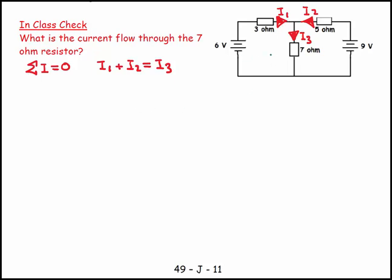And then the next thing I need to do is pick a loop direction, and I always pick clockwise. I don't know why, I just always pick clockwise. I don't care about the direction of the orientation of the batteries. I don't care, I just always pick clockwise. And the junction rule says, the sum of the voltages in a loop equals, sorry, the loop rule says, the sum of the voltages in a loop equals zero.